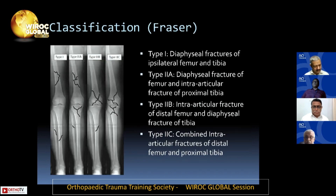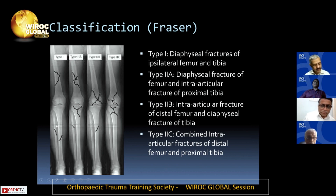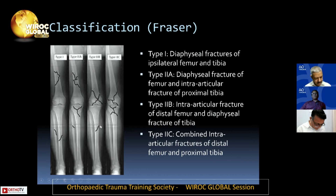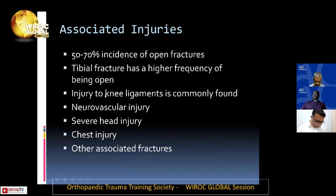The Fraser classification is commonly used. Type 1 involves diaphyseal fractures of the ipsilateral femur and tibia. Type 2 combines diaphyseal and intra-articular injuries, or both can be intra-articular. Type 2a is a diaphyseal fracture of the femur with an intra-articular fracture of the proximal tibia. Type 2b is an intra-articular fracture of the distal femur with a diaphyseal fracture of the tibia. Type 2c involves combined intra-articular fractures of both the distal femur and proximal tibia. Type 1 is the most common.